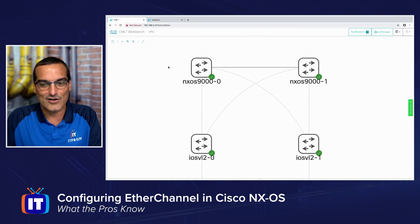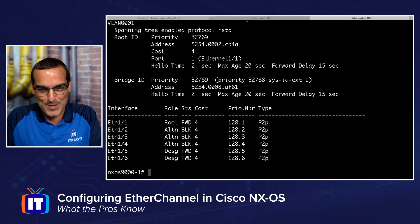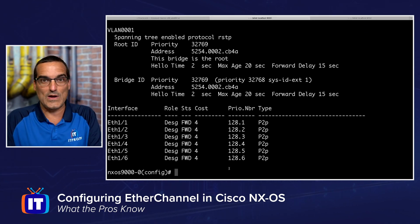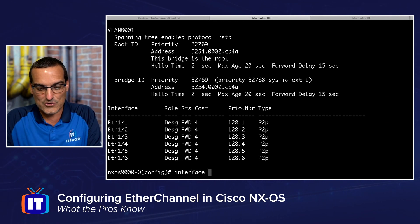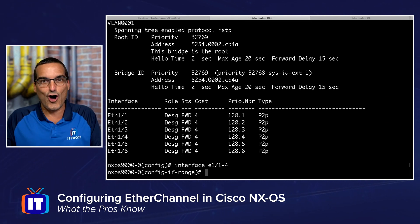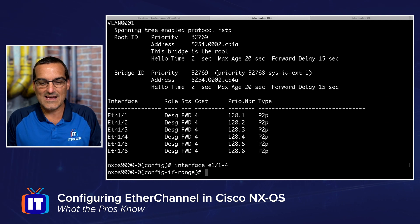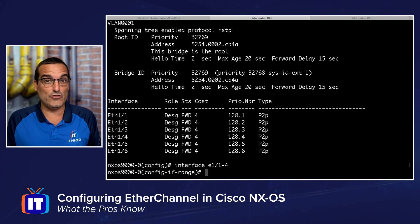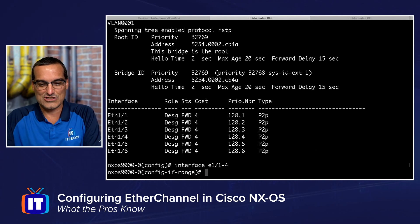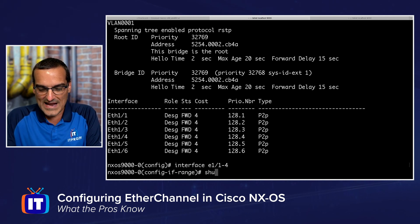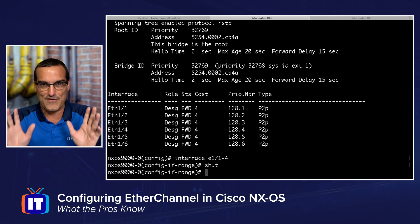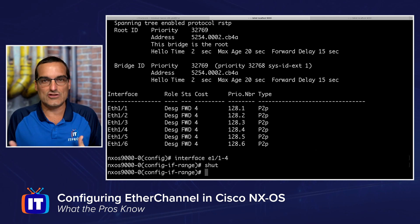EtherChannel can bundle those links together and make them look like one big link between these NXOS devices. So I'm going back to the first device to initiate configuration. I'll say 'interface E1/1-4' to configure all four interfaces together. Notice how NXOS simplifies this — there's no 'interface range' command; you just say Ethernet and specify the range syntax. Next, I'm going to shut those interfaces down.